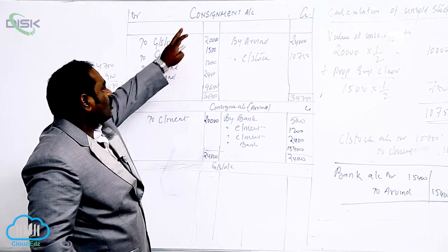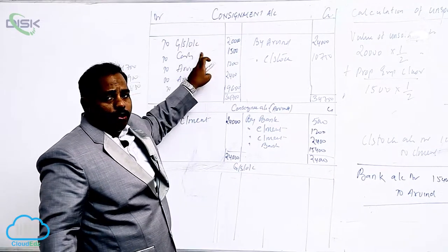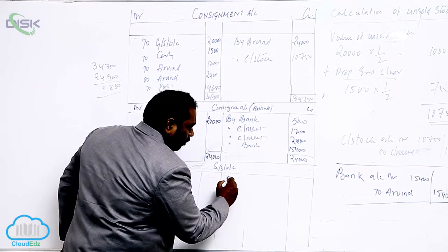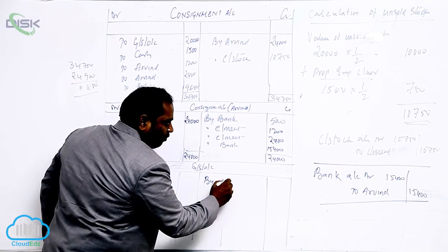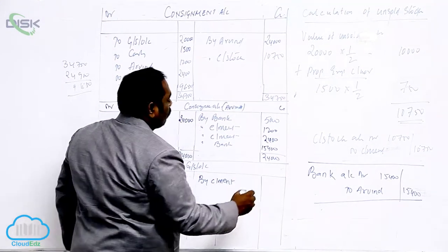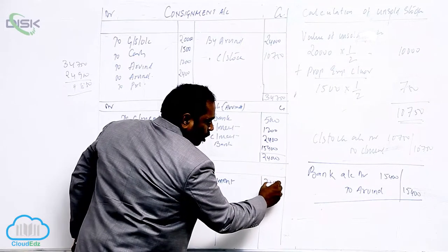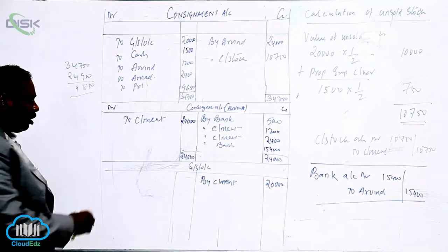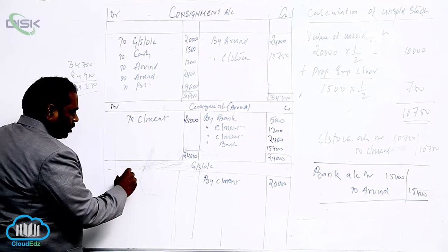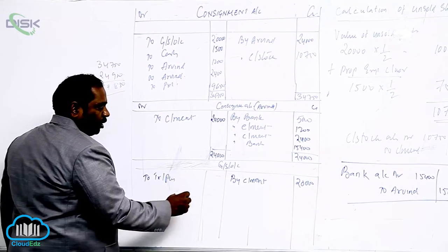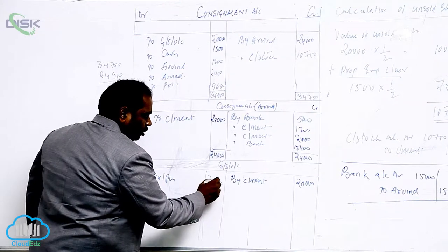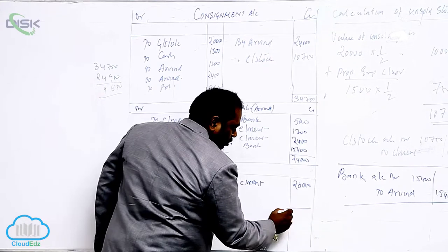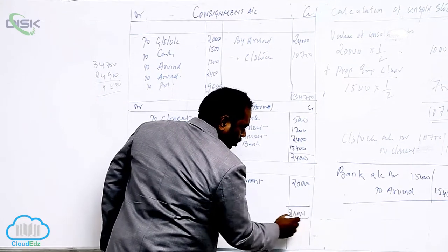In goods sent on consignment, what is the first entry? Consignment account debit to goods sent on consignment. In goods sent on consignment, we will write: by consignment for sending the goods. How much is the worth of goods we have sent? 20,000 worth of goods we have sent, and this should be transferred to trading or purchase. 20,000.